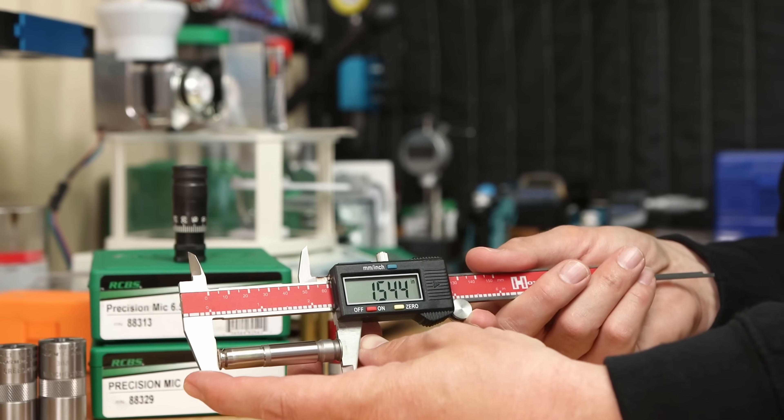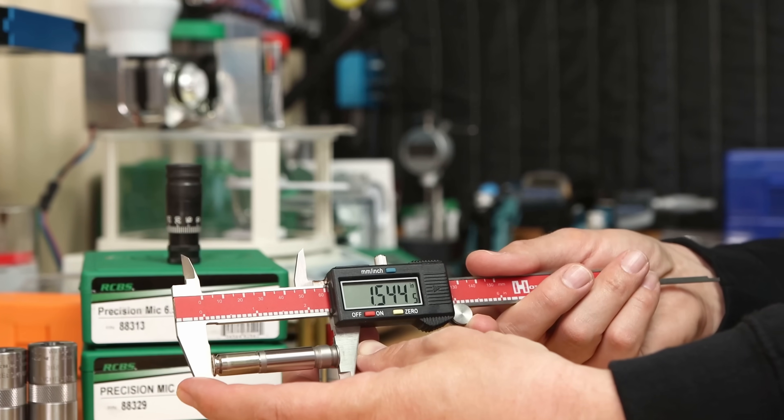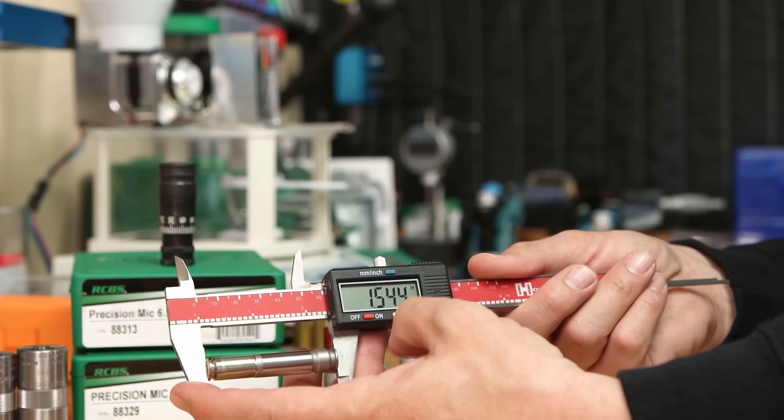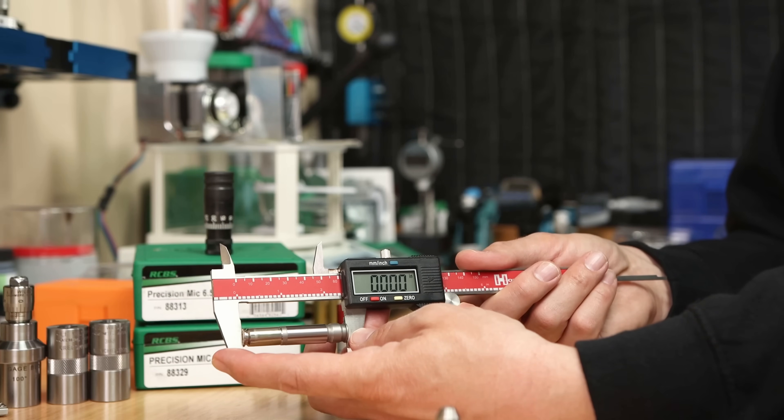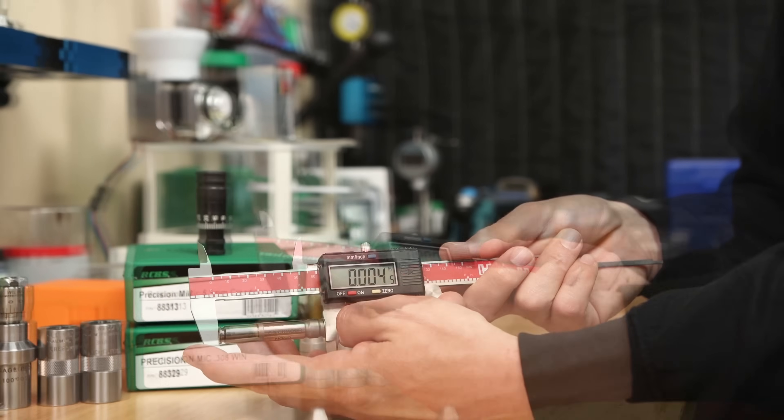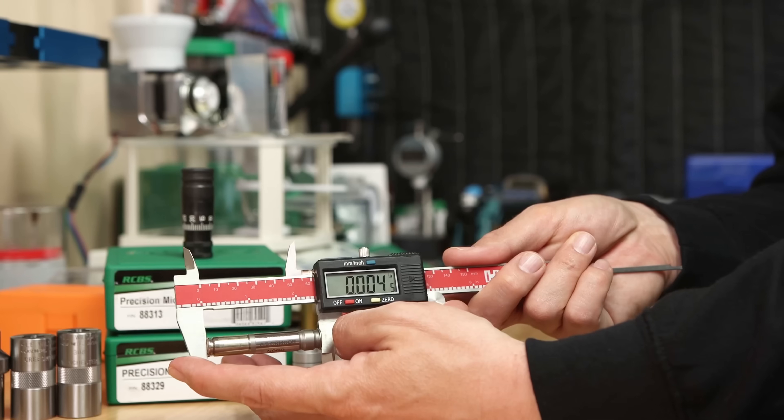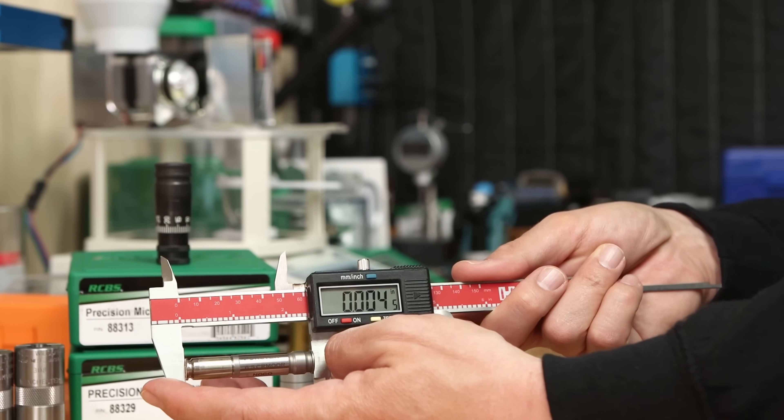So it's pretty close, but still not exact. However, if we just want to use it for a comparator, we can zero here and then see if we can see the 4 thousandths difference in our no-go gauge. Balancing this on our gauge the best we can, we can see it. We see somewhere very close to the 4 thousandths difference that's there.